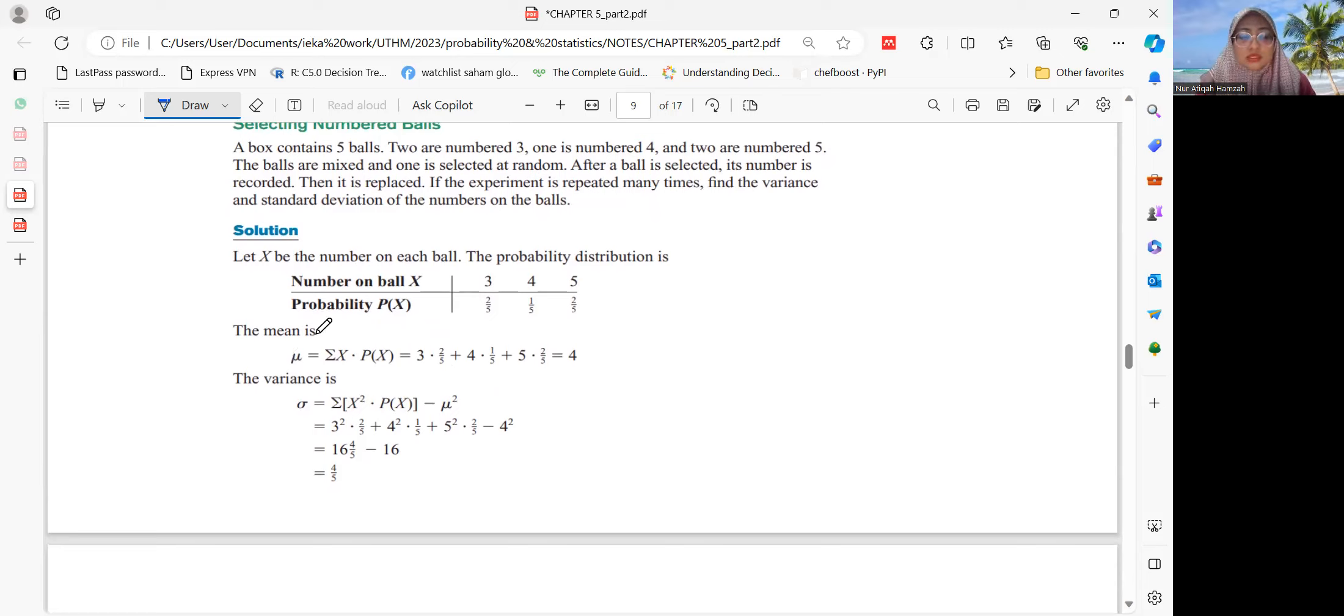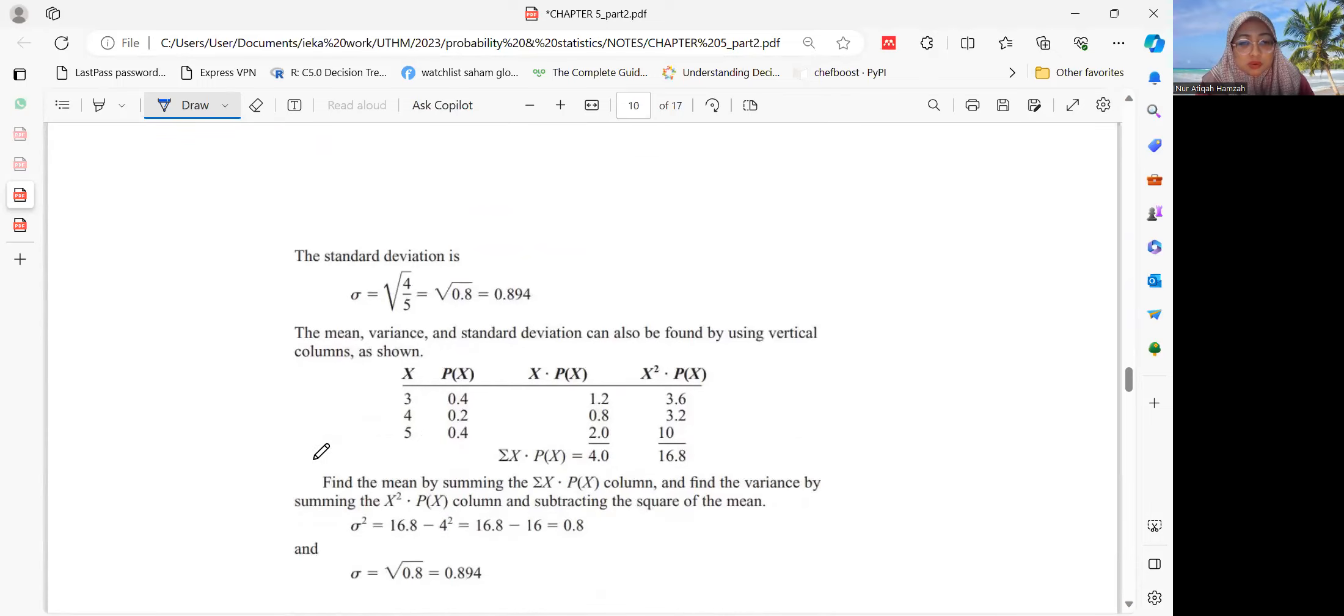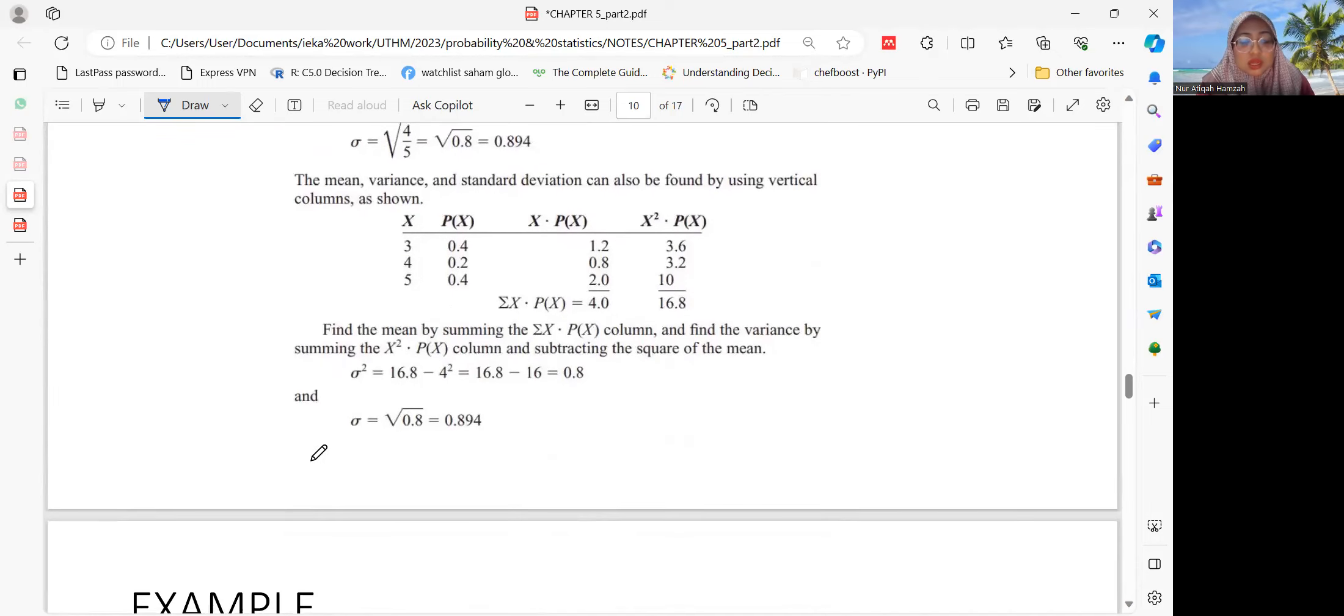So for this example you need to do it step by step. Find the mean first. Mean is summation of x P(x). For variance, summation of x squared P(x) minus mu squared. So you only need to square the value of x, multiply with P(x), add them up, and then minus with the mean value to get the variance. And if you need to get standard deviation, just take the square root.